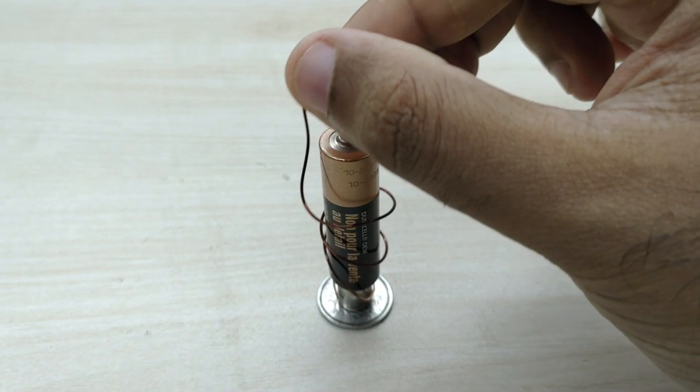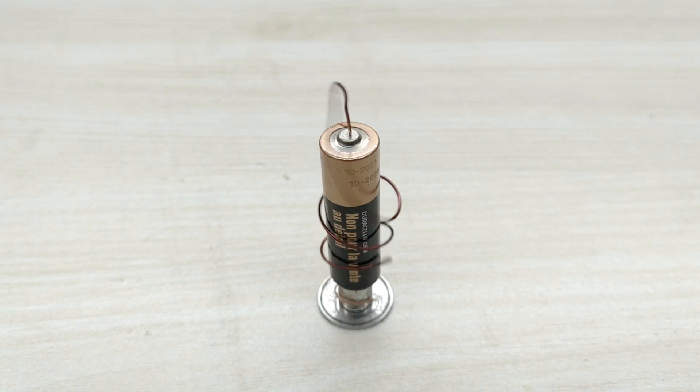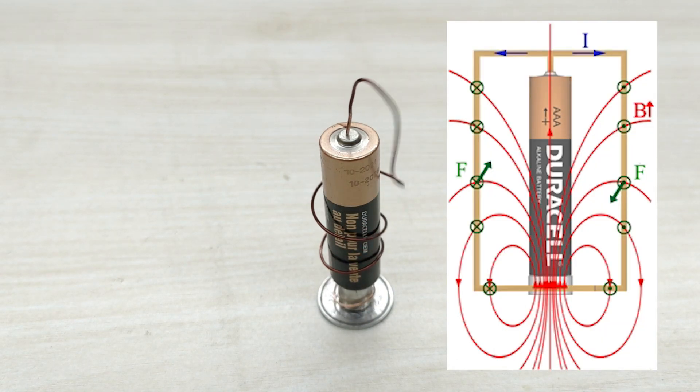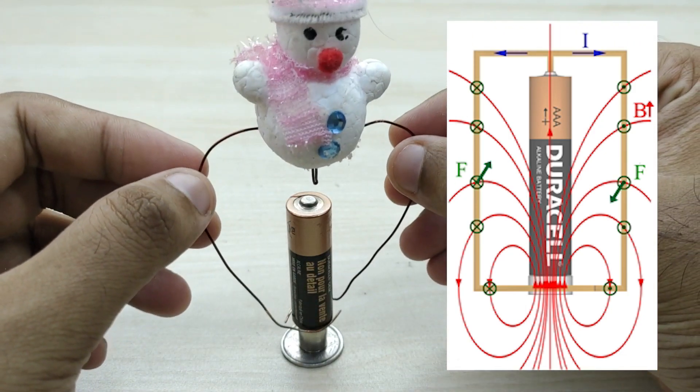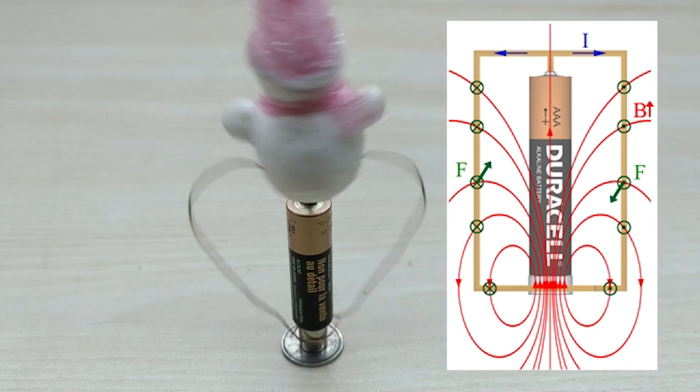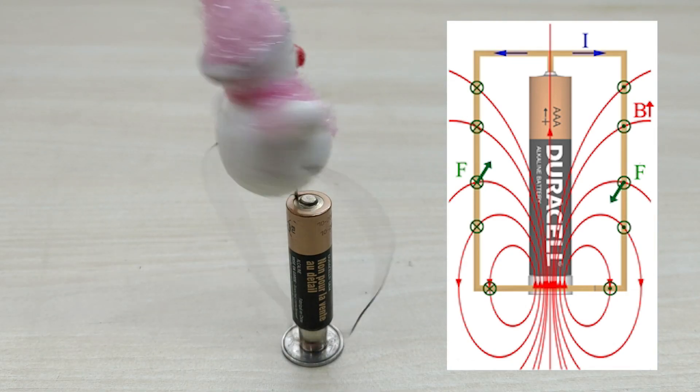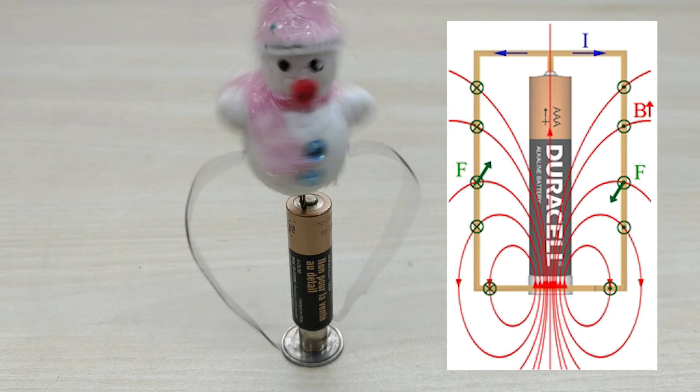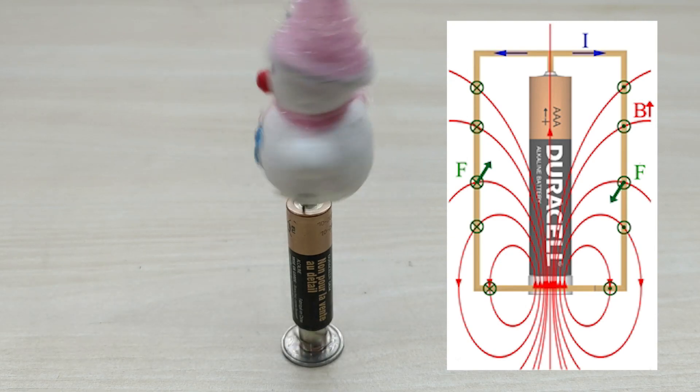Now, let me explain how this homopolar motor works. The magnetic field exists around the coil due to the magnet kept below the battery. The current that flows from the battery travels perpendicularly from the magnetic field. This causes the creation of a force perpendicular to both the magnetic field and current. This force, known as the Lorentz force, is exerted on the copper wire, the conductor, causing it to spin.